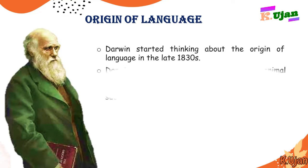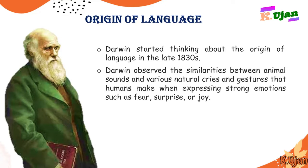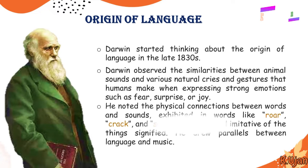Darwin observed the similarities between animal sounds and various natural cries and gestures that humans make when expressing strong emotions such as fear, surprise, or joy. According to Darwin, just because of the expression of strong emotions, humans uttered words, and that was actually the beginning of language.